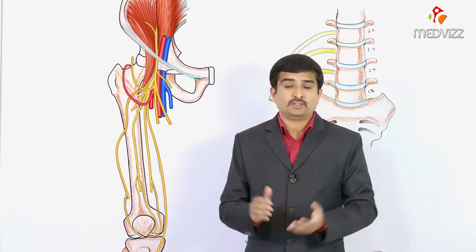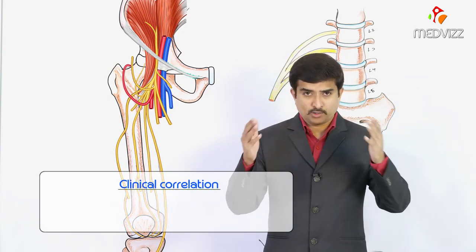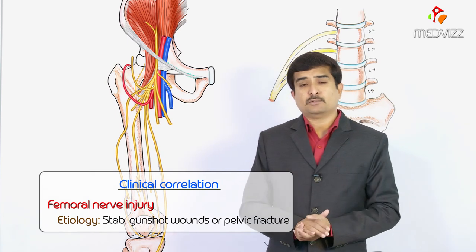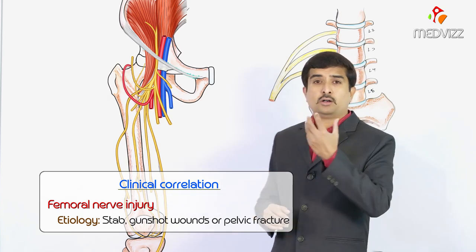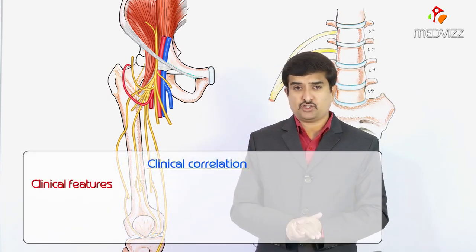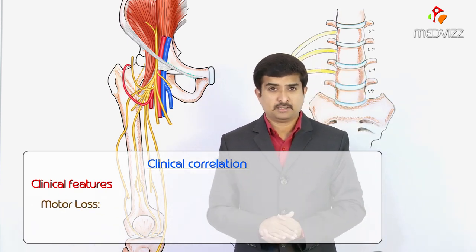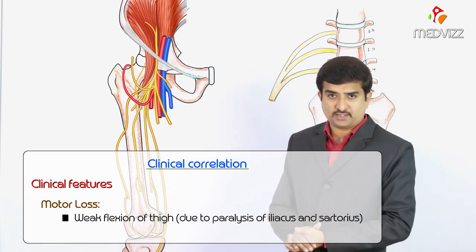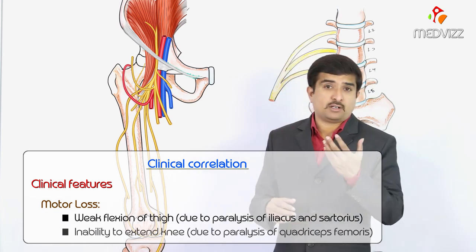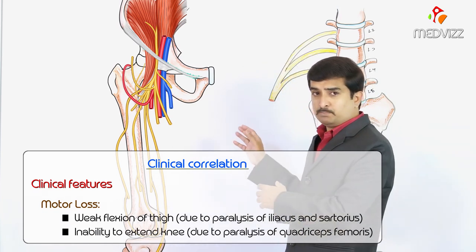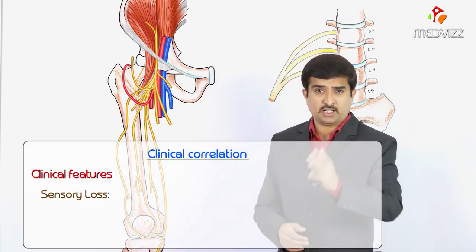Femoral nerve injury is most commonly associated with stab wounds, gunshot wounds, or pelvic fractures. The clinical features are both motor and sensory in nature. There will be weak flexion of the thigh due to paralysis of the iliacus and sartorius, and the patient is unable to extend the knee, mainly due to paralysis of the quadriceps femoris.